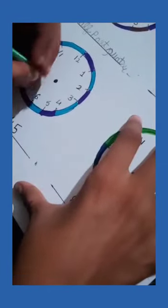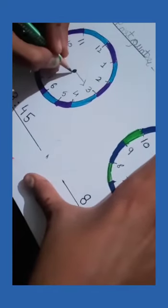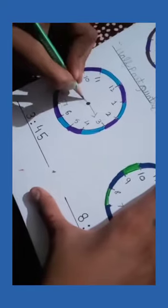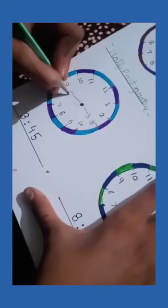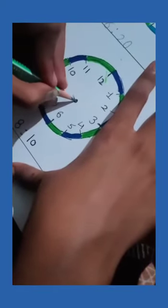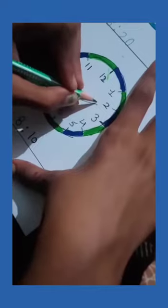Now we will draw hands. Our hand is on 3. Minute hand is on 9. Next, our hand is on 8. Minute hand is on 2.